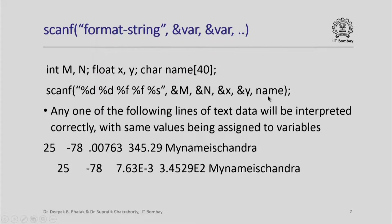Why have we not used &name? Because name is a character string — a 40-character array — and the name of the array itself is a pointer, so we need not say &name. If I give input such as: 25, -78, 0.00763, 345.0.29, and "my name is Chandan", it will correctly associate the same values to the variables. Notice that cin would have accomplished the same thing, but scanf does it as per our format specifier, and the same format specification works even if data is given differently. There is a special feature of scanf which permits things cin cannot do.